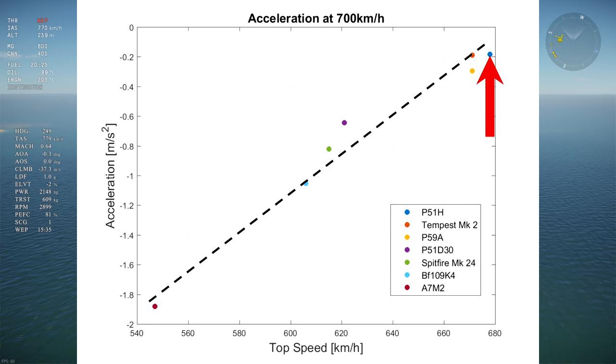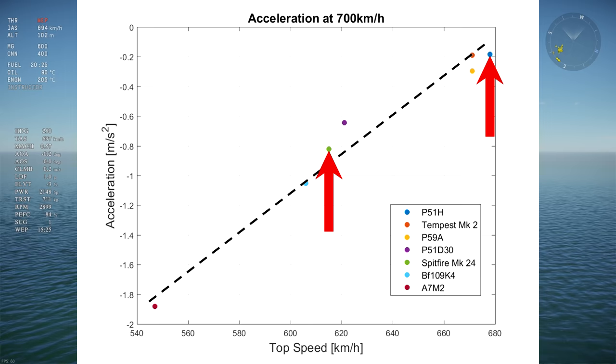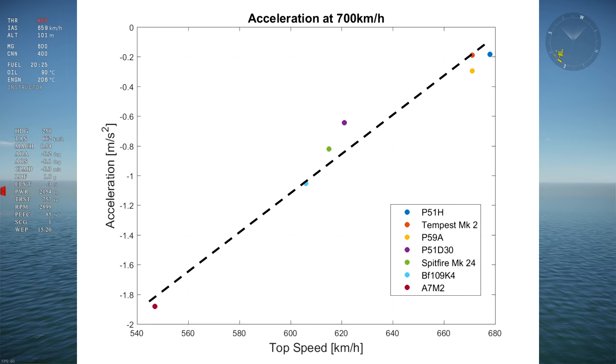For example, the P-51H, with its acceleration of minus 0.2 meters per second squared, will lose 4 times less energy per second at 700 kph than the Spitfire Mark 24 at the same speed with its minus 0.8 meters per second squared. 4 times is a massive difference when a climb advantage of 1.1 times is significant.